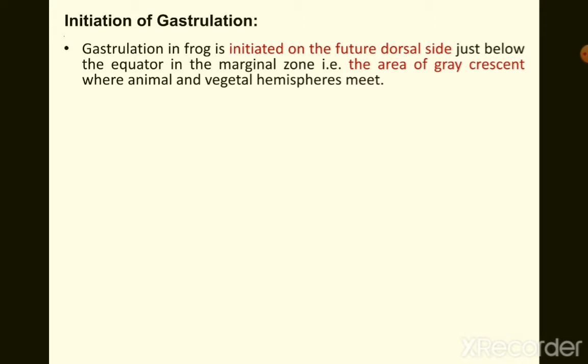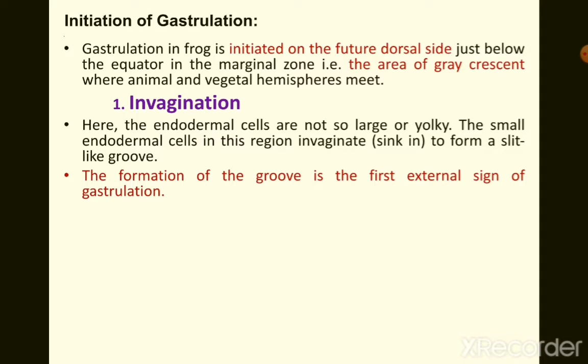Gastrulation in frog is initiated on the future dorsal side, just below the equator in the marginal zone — that is the area of the gray crescent where the animal and vegetal hemispheres meet. It is at this point that invagination takes place, as the endodermal cells here are not so large and yolky.